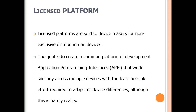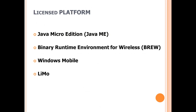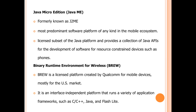A licensed platform is sold to device makers for non-exclusive distribution on devices. The goal is to create a common platform of development and application programming interfaces, APIs, that work similarly across multiple devices with the least possible effort and to adapt to different devices, although that is hardly reality. The licensed platforms include Java Micro Edition, Java ME, Binary Runtime Environment for Wireless, BREW, Windows Mobile, and Linux Mobile.